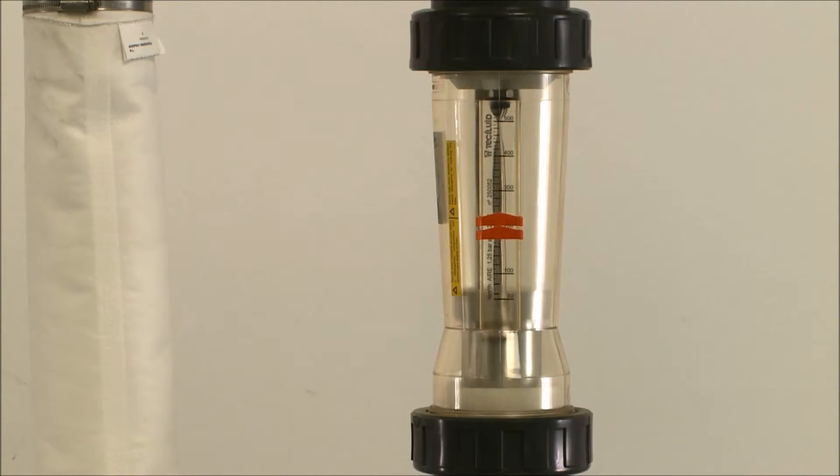The flow rate of the air that circulates through the plant is measured by means of a rotameter.